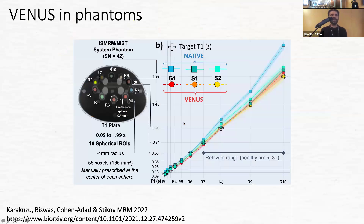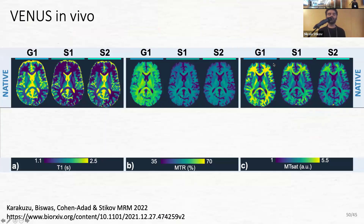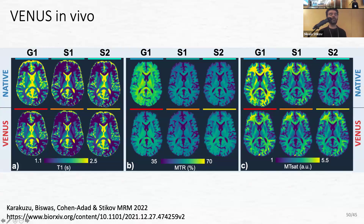The vendor-neutral implementation works really well in phantoms. The crosses — our measurement — are very close to the true values, while the blue measurements from vendor-specific implementations get the numbers slightly wrong. Looking at brains, which is what we really care about: the native implementations between GE and Siemens show a very different brain even though it's the same subject. After running through our vendor-neutral implementation, the brains become much closer.